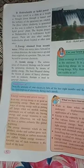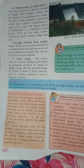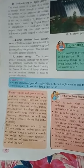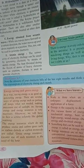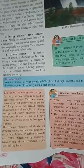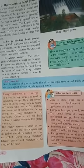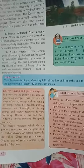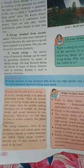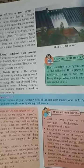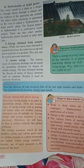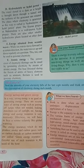You have to save energy and energy resources — it is very necessary. Otherwise we will have to face a serious calamity like global warming. The energy resources which do not produce smoke and carbon gases such as carbon dioxide or carbon monoxide, which do not cause any pollution, are called green energy resources. The greater use of such resources is the need of the hour.